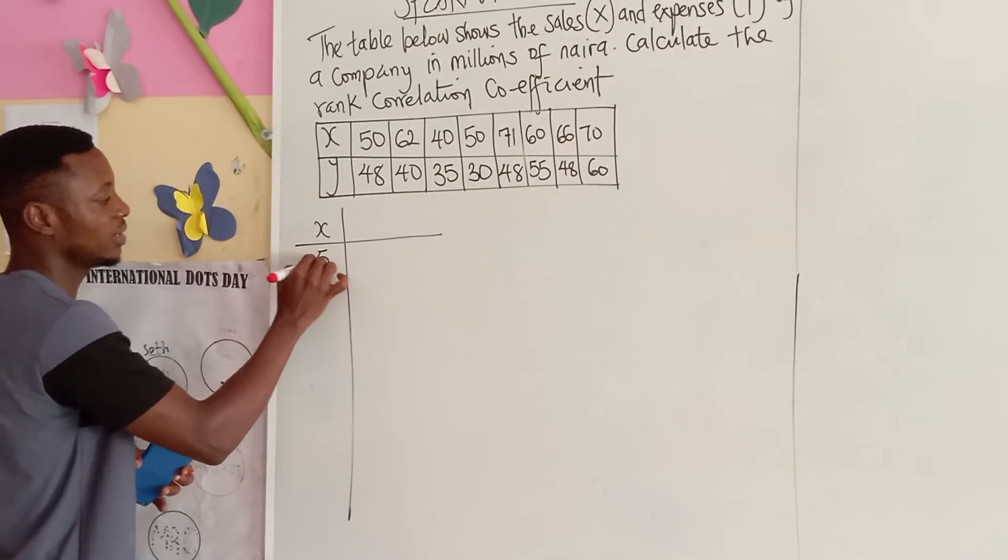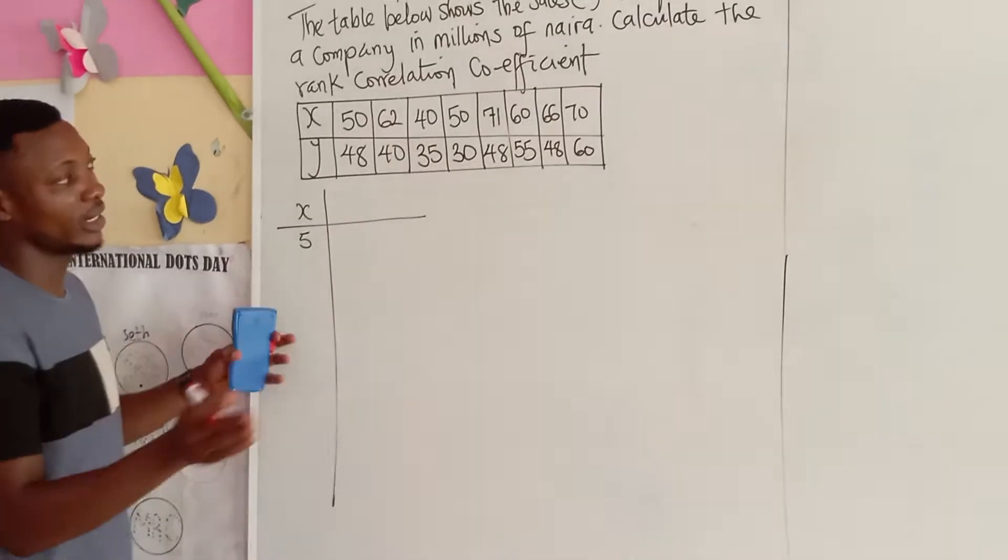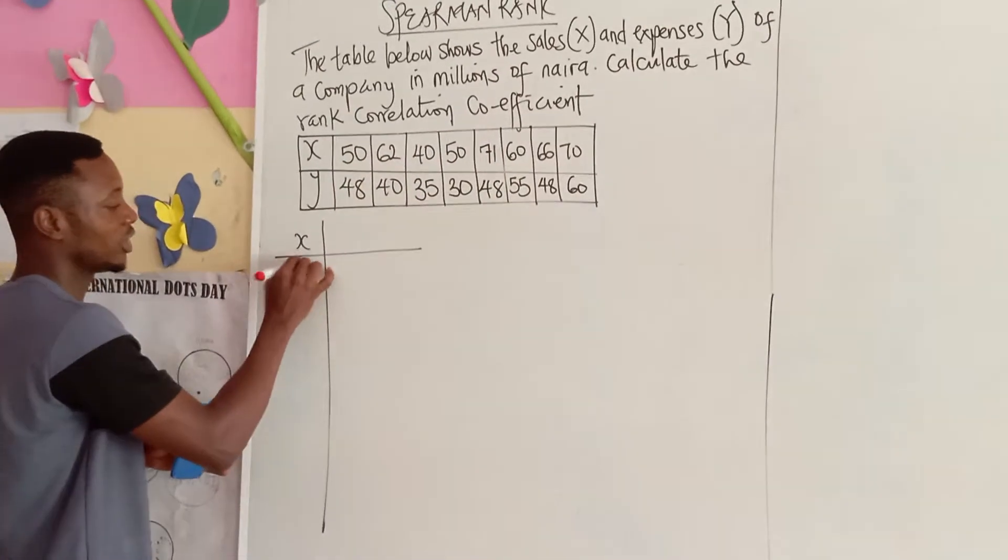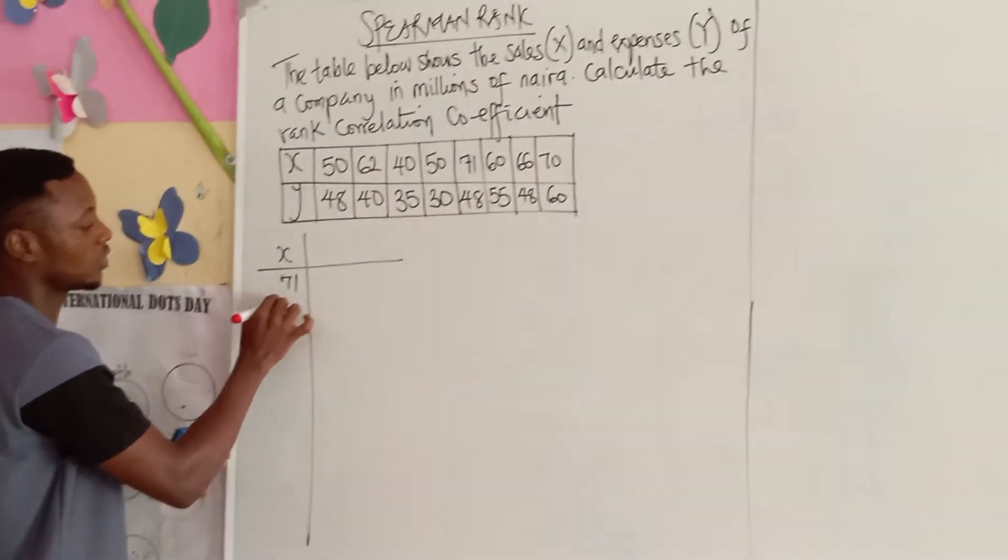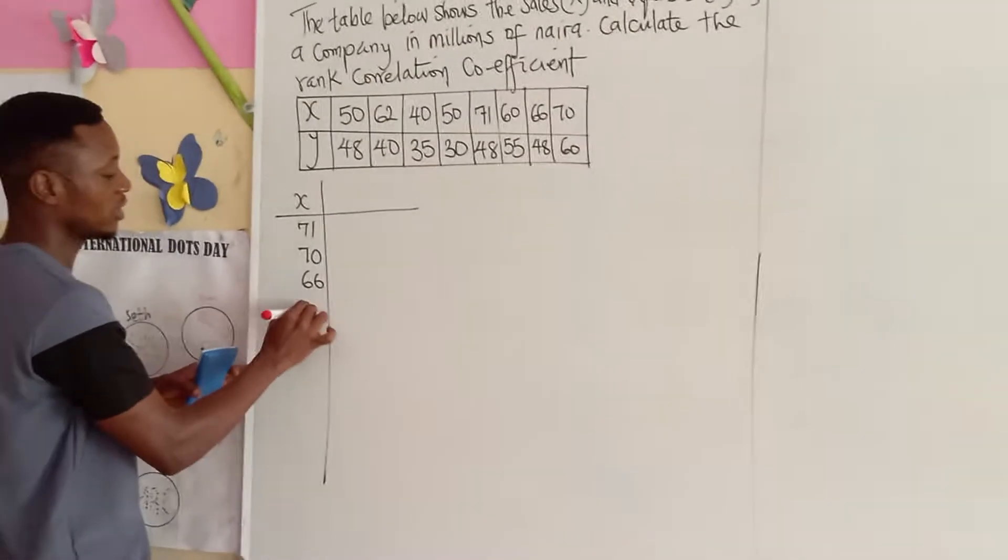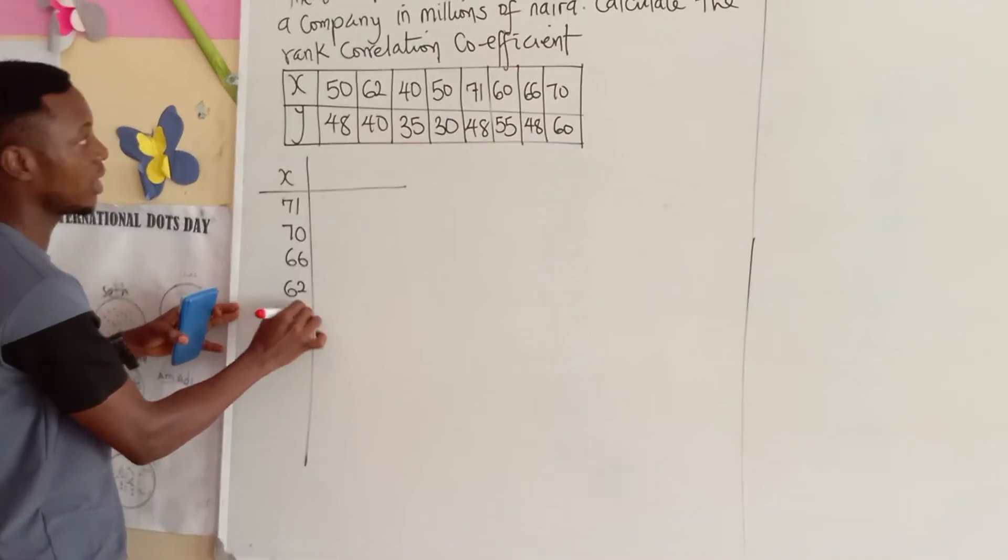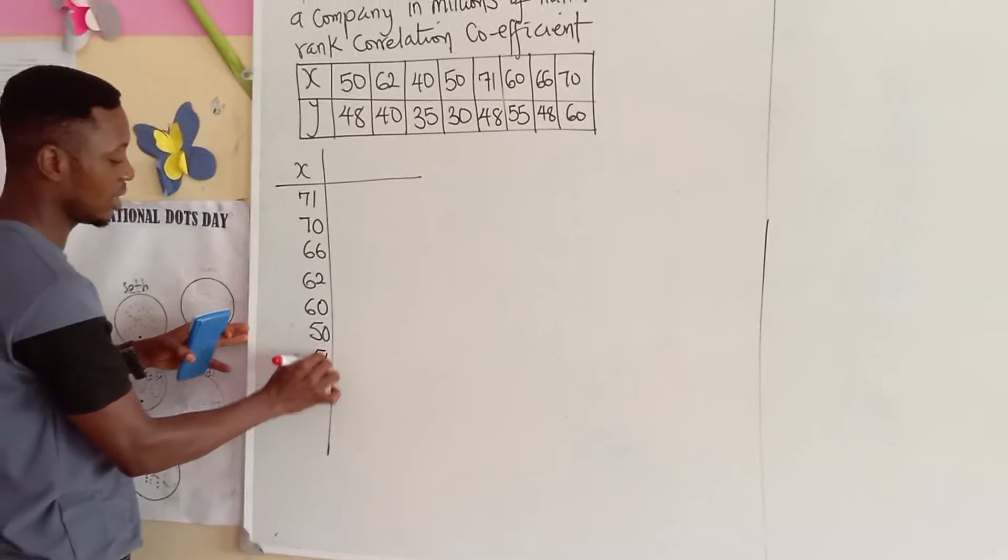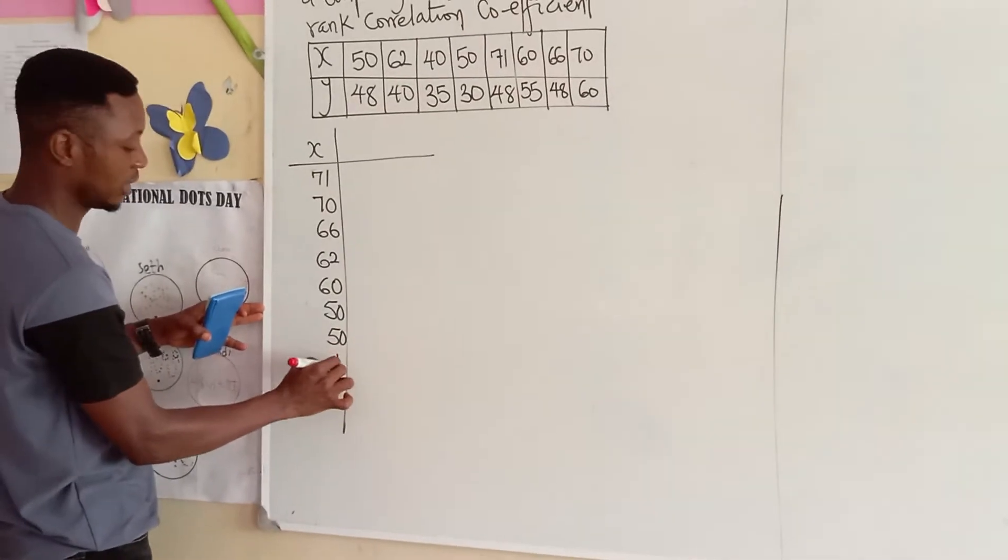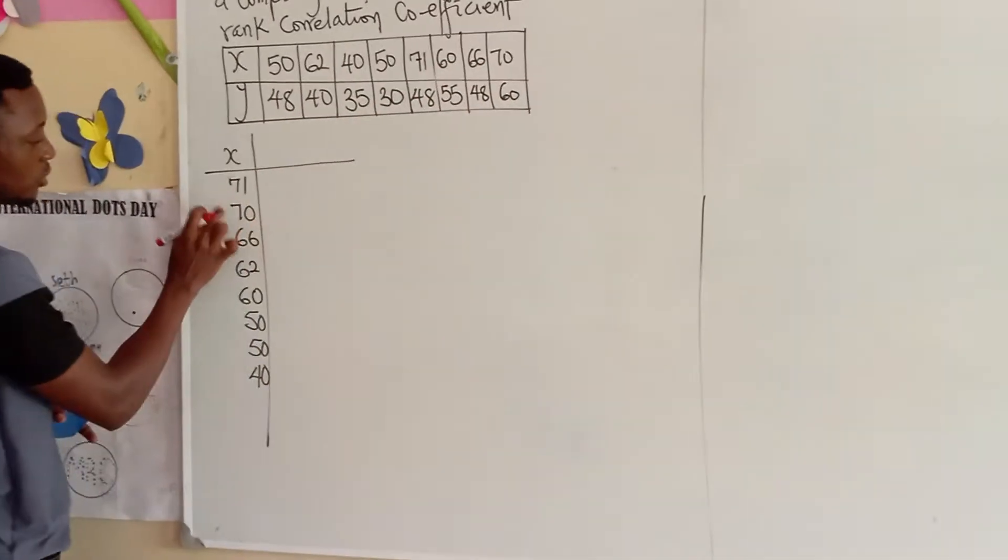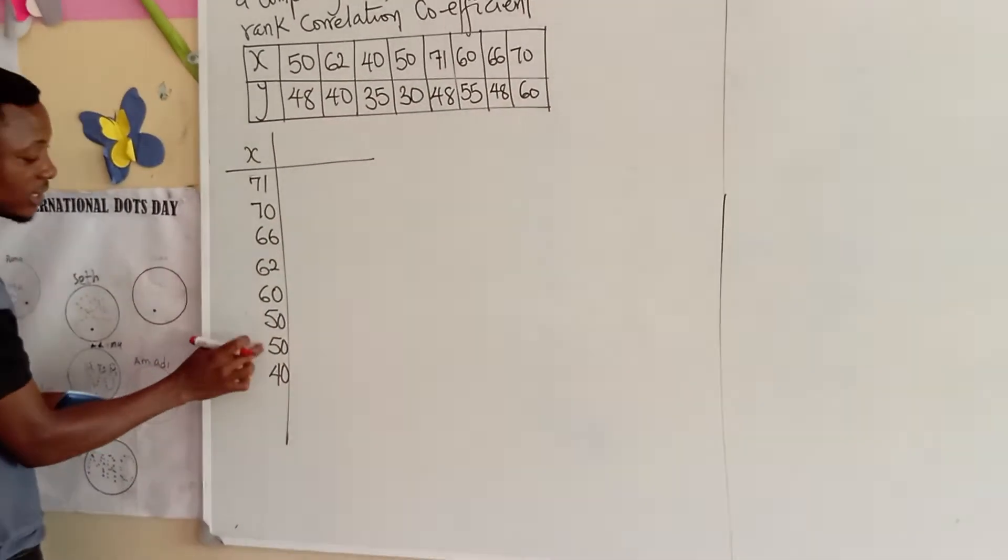We have X. Now, X is 50. Now, I'm going to rank it in descending order. So, I will start from 71, which is the highest. After 71, we have 70. We have 66. We have 62. We have 60. We have 50. We have 50. And we have 40, which is 1, 2, 3, 4, 5, 6, 7, 8.